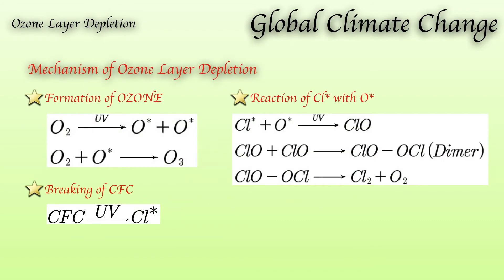The basic mechanism of ozone layer depletion begins with ozone formation: oxygen, in the presence of UV light, gets converted into reactive oxygen, which reacts again with oxygen to form O3, which is ozone. Similarly, CFC breaks down under UV light and produces reactive chlorine.